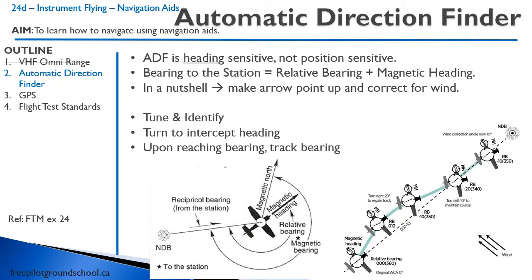There is a formula to memorize: bearing to station equals relative bearing plus magnetic heading. The easiest way, if you don't want to do the math, is to look at the ADF and see where the arrow is pointing, then think about moving that arrow onto your heading indicator — that tells you your bearing to station. In a nutshell: make the arrow point up and correct for wind.